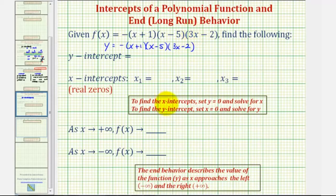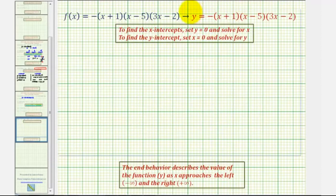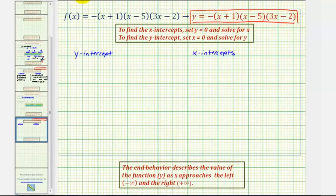To find the intercepts of any function, the process is the same. To find the y-intercept, we set x equal to zero and solve for y. And to find the x-intercepts, we set y equal to zero and solve for x. Let's go ahead and use the form of the equation where we have y instead of f of x.